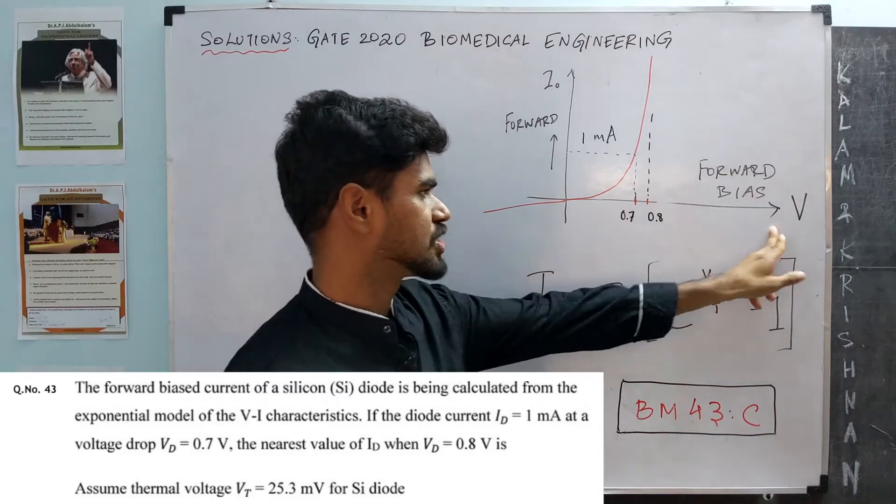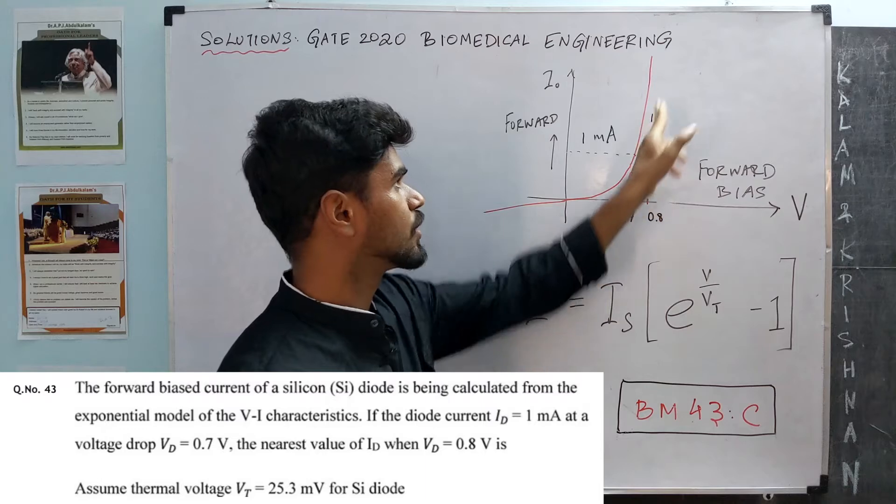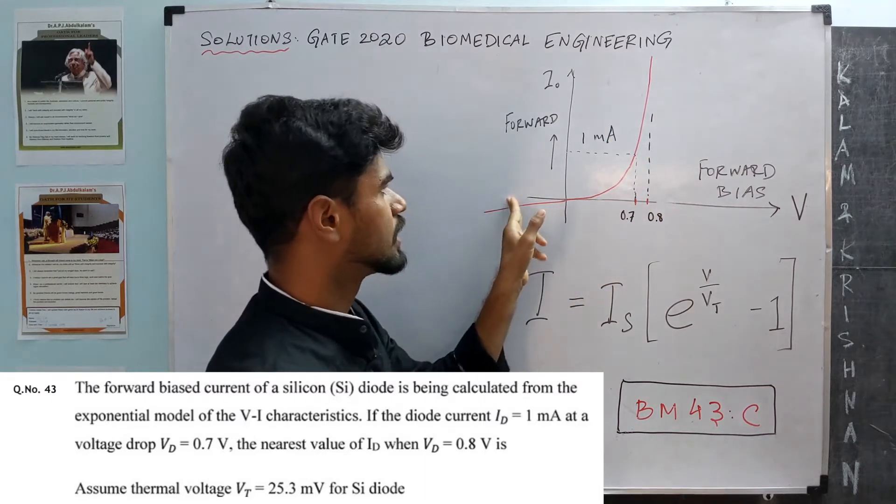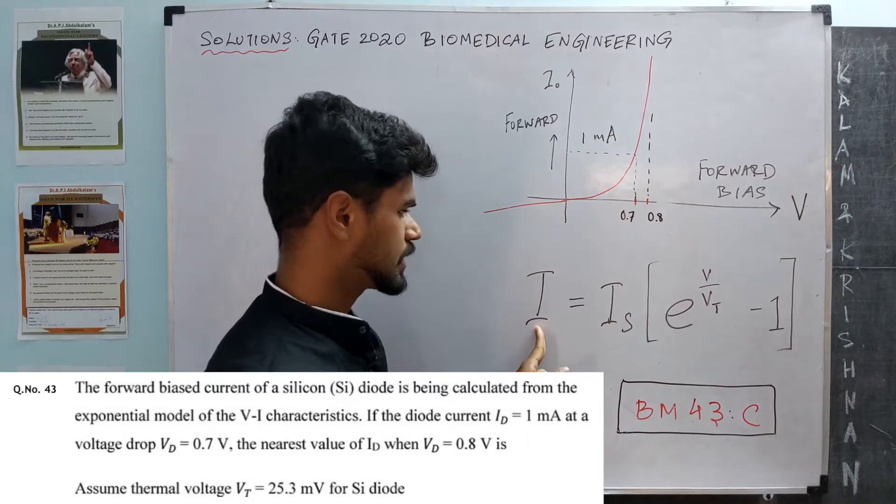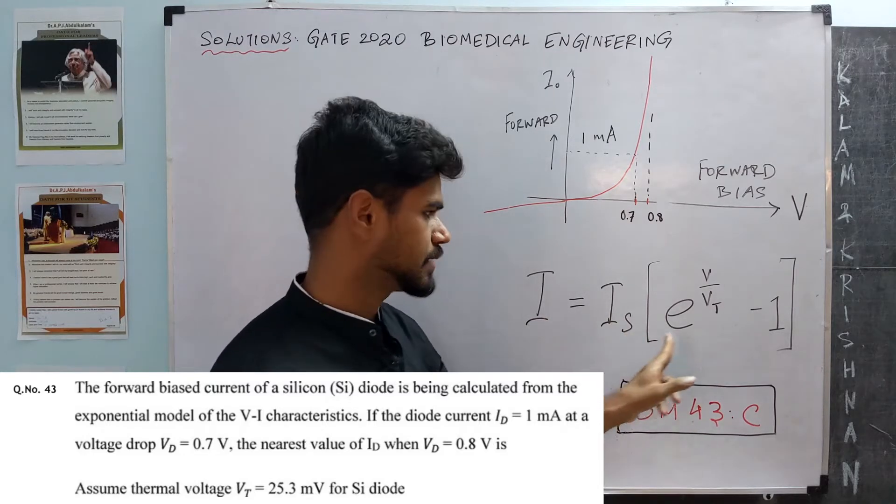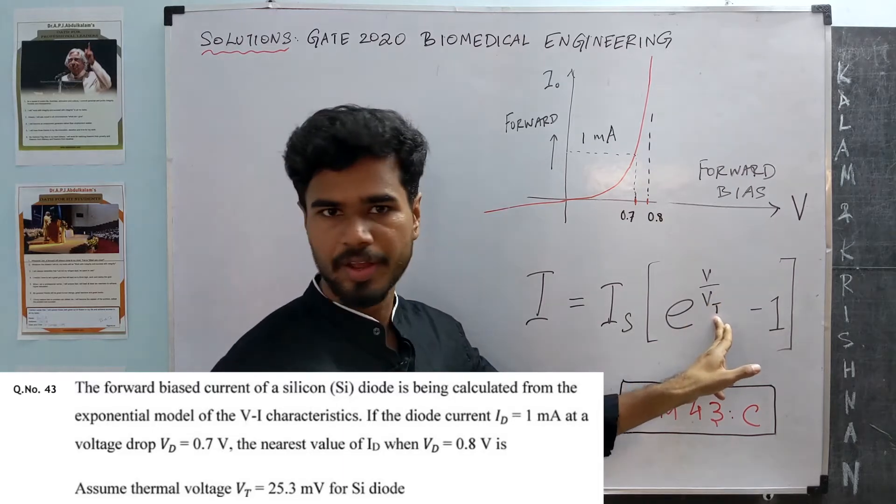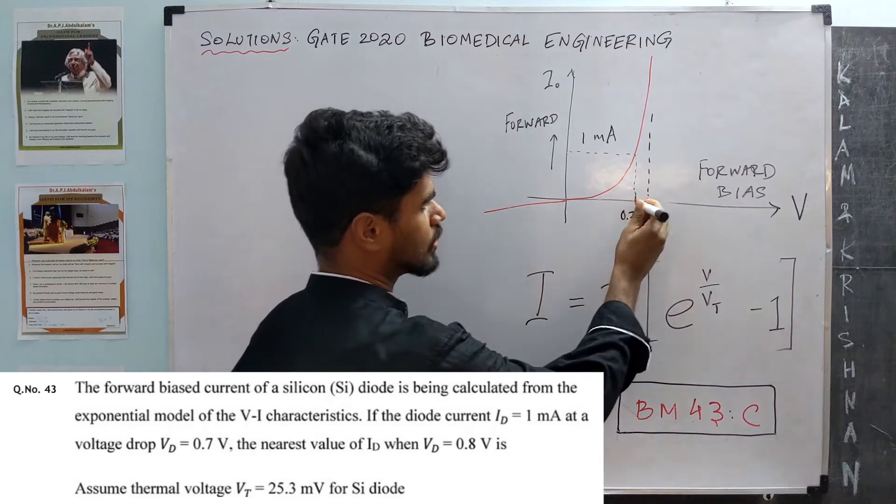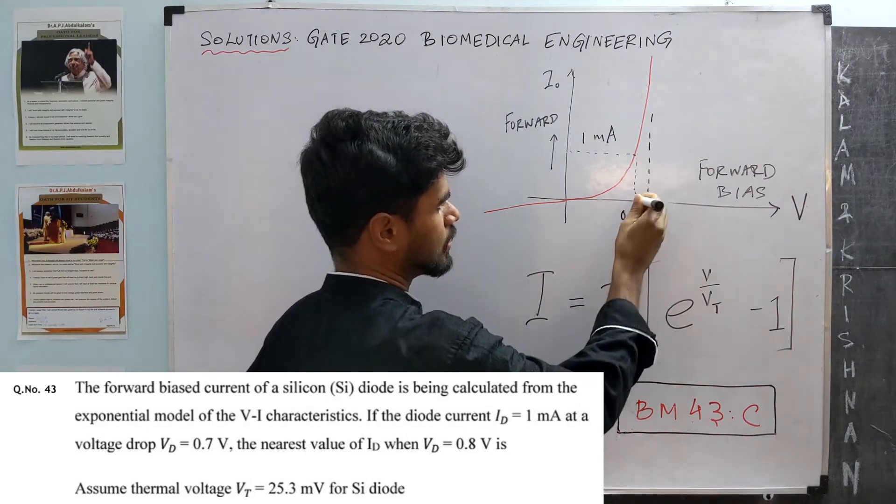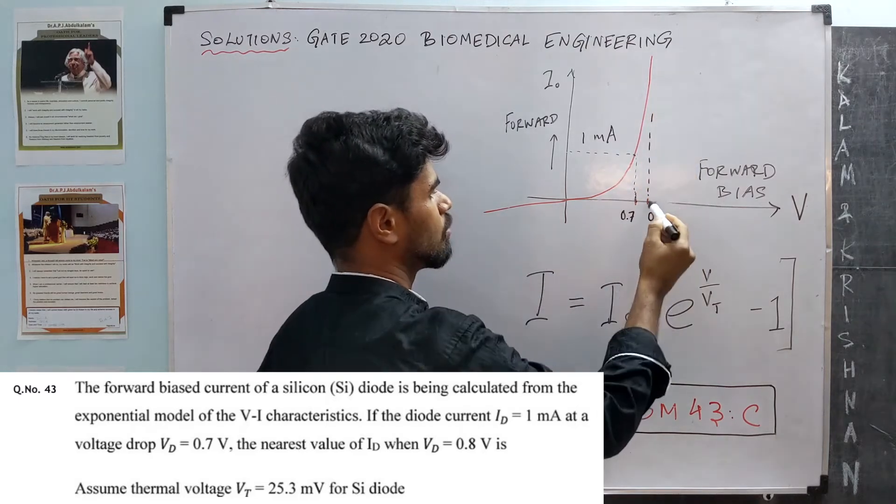The voltage-current characteristics for a diode in forward bias is exponential. The current in it depends on a constant Is times exponential of the forward bias voltage by thermal voltage minus 1. They have given what the current is at 0.7 volts, and they want the current at 0.8 volts.